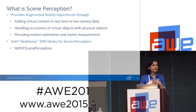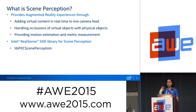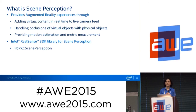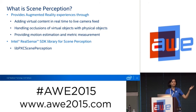Scene perception, as we define it, is at the intersection of a couple of things. You're able to get a sense of your physical world and you're adding virtual content onto it, which creates the augmented reality experience. The second component is how you're able to handle occlusion. In this context, occlusion means: if I have two objects with one partially covering another, will I get a sense of that in 3D space?